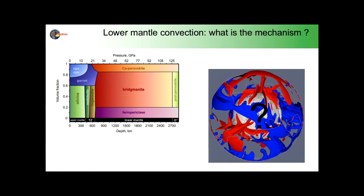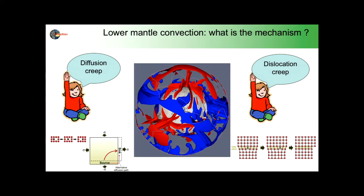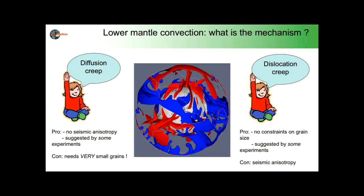Now I want to see how this applies to other minerals in the lower mantle, specifically bridgmanite. The question is: what is the mechanism of mantle convection? Everyone has an answer but not always the same one. The two main possibilities are dislocation creep, as I described, and diffusion creep, where plastic deformation is made by transporting matter — vacancies — from one side of a grain to another. Both have been found in experiments depending on the conditions applied.